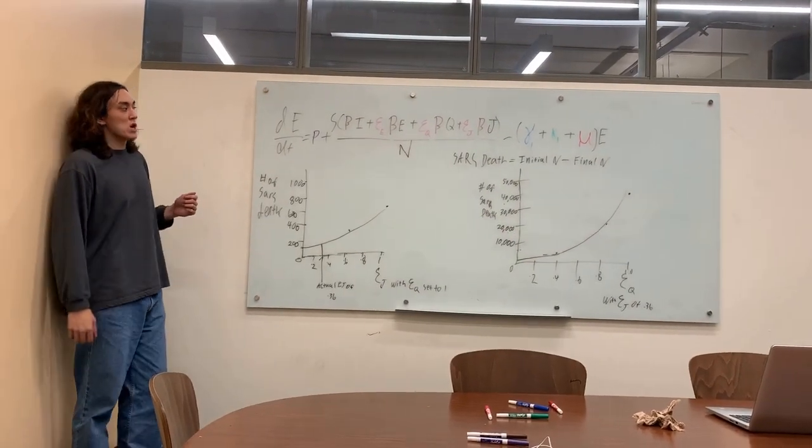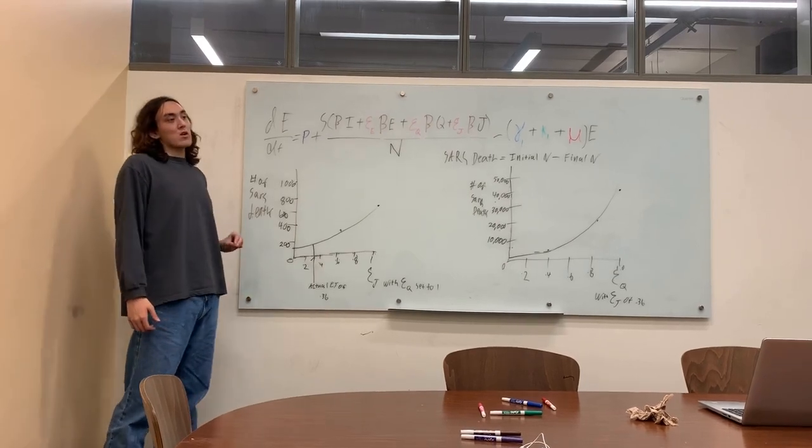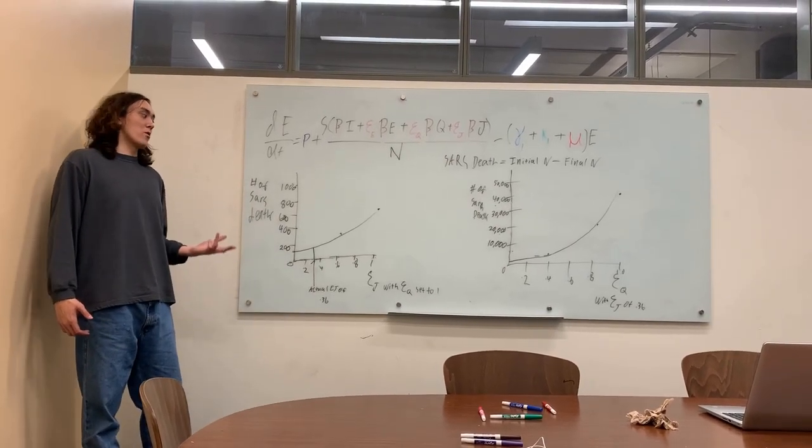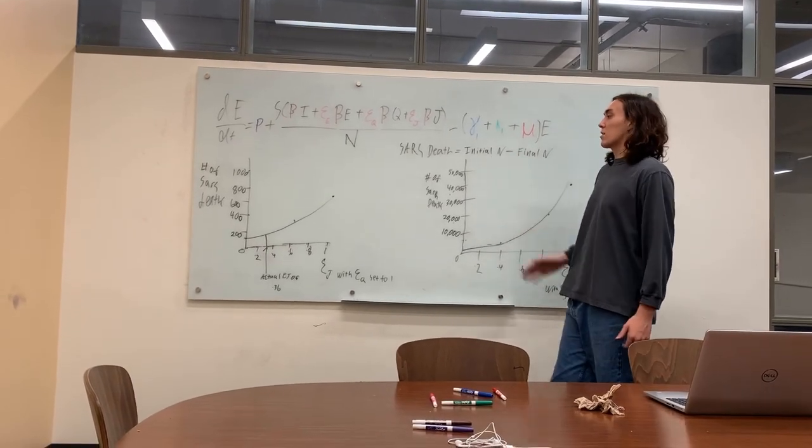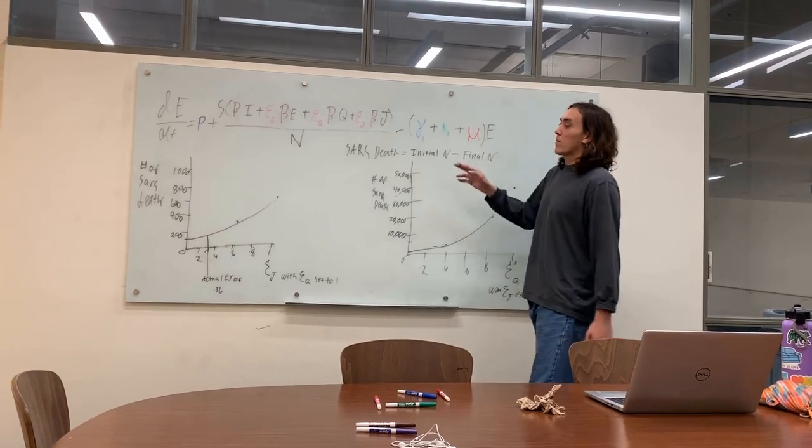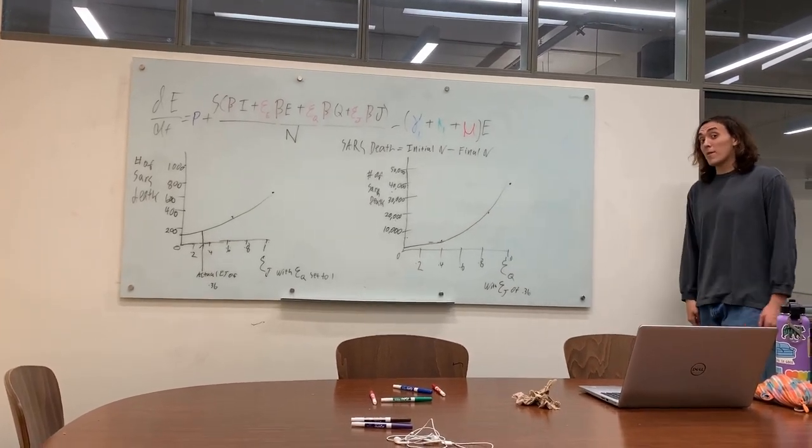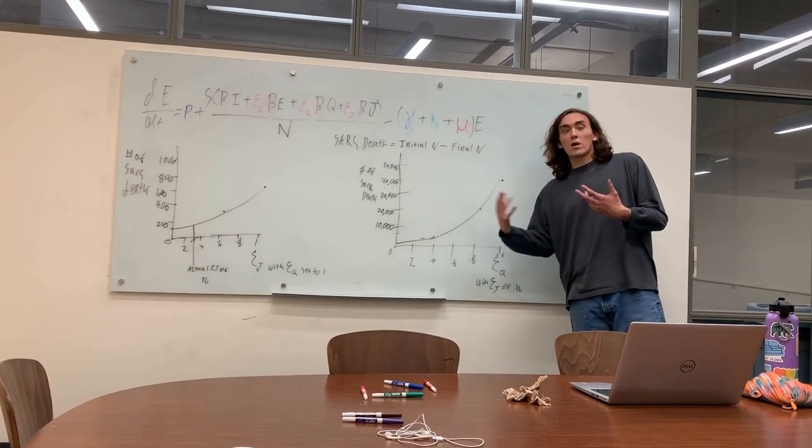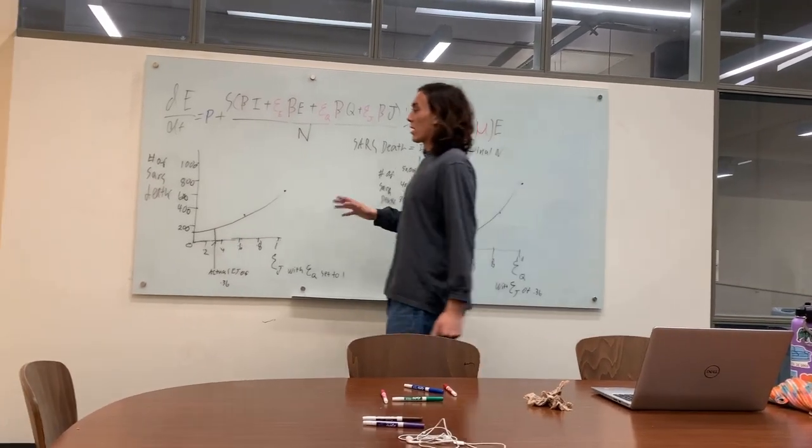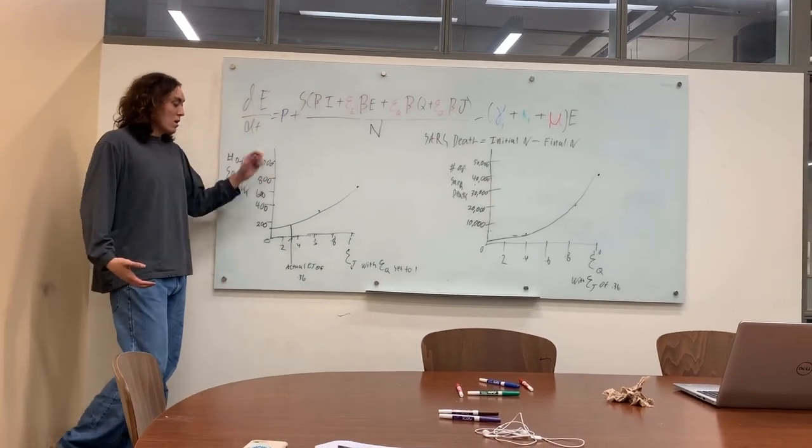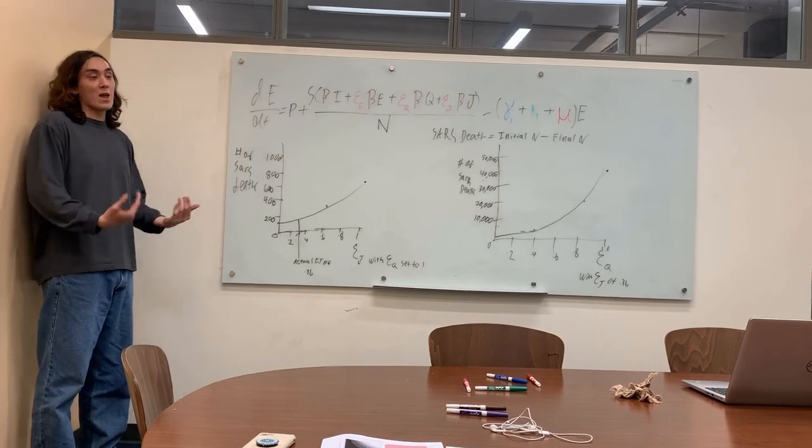I have here some bifurcation diagrams we generated to analytically support the main ideas of the paper, that isolation with pretty much no funds or resources devoted to quarantine is better than mediocre isolation and medium quarantine. On our bifurcation diagrams, we have a number of SARS deaths compared to a changing of the epsilon q and epsilon j modifiers for beta transmission. We calculate SARS deaths by just taking the initial N and tracking the final N. They do the same calculation in paper, even though we have this mu constant in our calculations, which is non-SARS deaths. They concluded it was inconsequential, so we will do so as well.